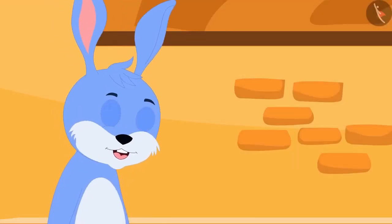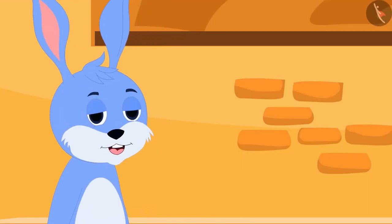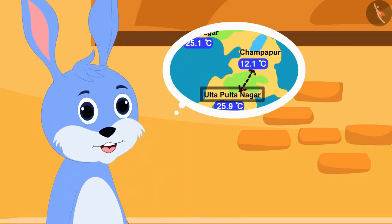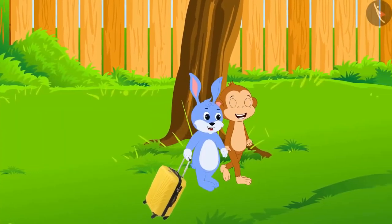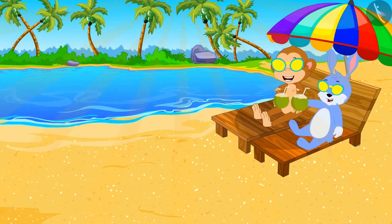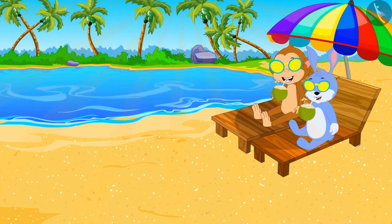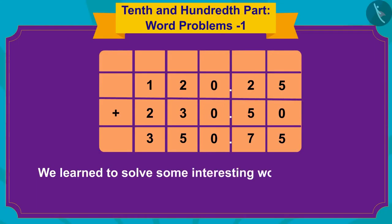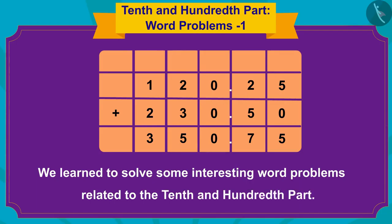Now, because both these numbers have two digits after the decimal point, I will write a decimal point in this way in the answer. That gives 350.75 or 350 rupees 75 paise. Bunny got very excited. He bought two train tickets to go from Champapur to Ulta Pulta Nagar and together Bunny and Babban reached Ulta Pulta Nagar for holidays. In this video, we learned to solve some interesting word problems related to the tenth and hundredth part.